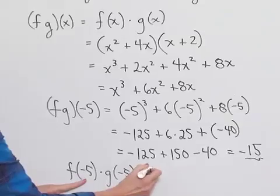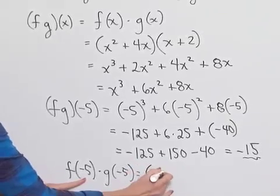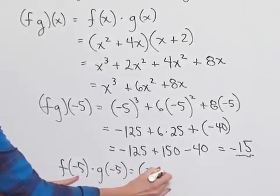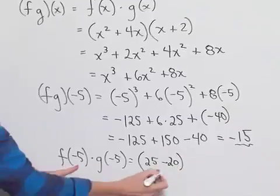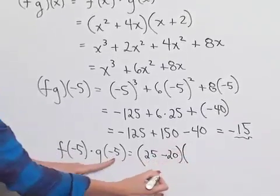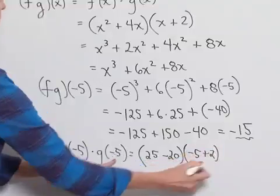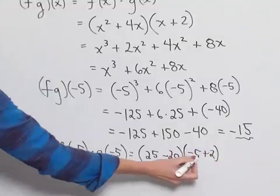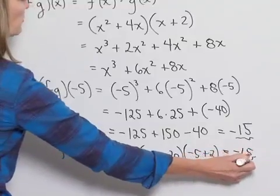f of negative 5 would have been negative 5 squared, which would be 25, plus 4 times negative 5, which is minus 20. We then multiply that times negative 5 plus 2. So here we're going to have 5 times negative 3, which confirms our result of negative 15.